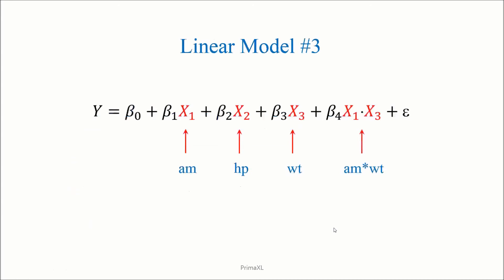Now, the next linear model. Here, X1, X2, and X3 are the same as before. However, we have the so-called interaction term, which is X1 times X3 or AM times WT.